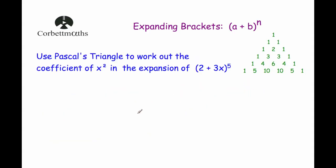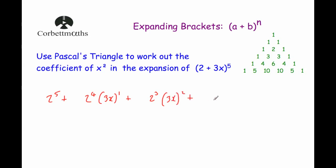Some questions only ask for the coefficient of a particular term. For example: use Pascal's triangle to find the coefficient of x squared in the expansion of 2 plus 3x all to the power of 5. We write: 2 to the power of 5, then 2 to the power of 4 times (3x) to the power of 1, then 2 cubed times (3x) squared, and so on — but since we only need x squared, we can stop there.